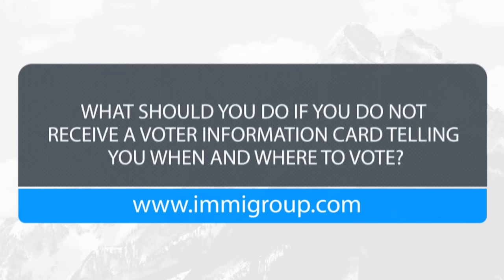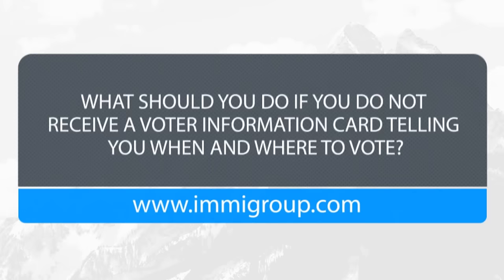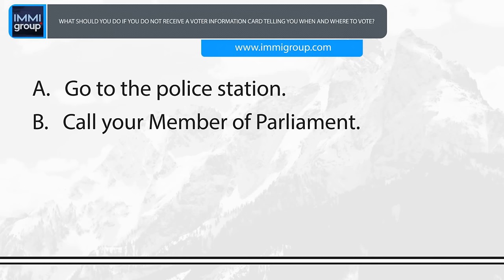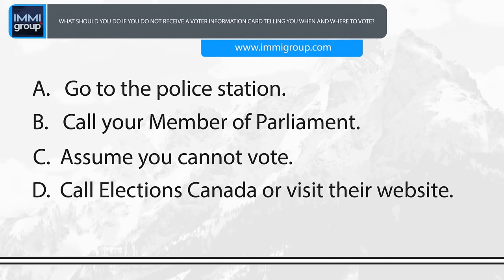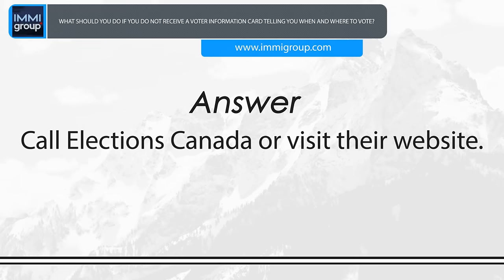What should you do if you do not receive a voter information card telling you when and where to vote? A. Go to the police station. B. Call your Member of Parliament. C. Assume you cannot vote. D. Call Elections Canada or visit their website. Answer: Call Elections Canada or visit their website.